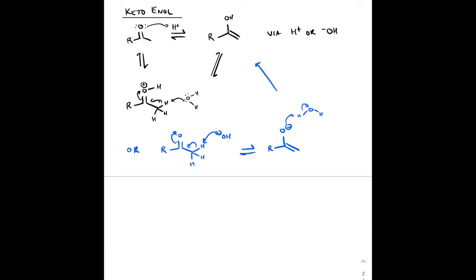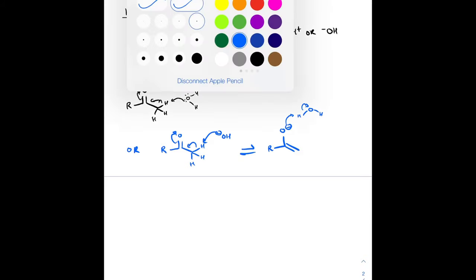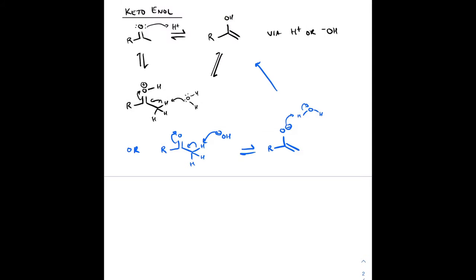In the presence of base, hydroxide can remove that acidic proton and we end up with our enolate.